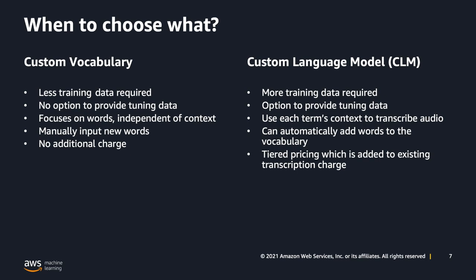Earlier in this presentation, we touched upon custom vocabulary. So when should you choose custom vocabulary versus CLM? Custom vocabularies are great, but there's an optimal number of terms that can be added before impacting performance. CLMs require more training data than custom vocabularies, which can generate significant accuracy improvements. CLMs can also recognize individual terms with context and automatically add words to their recognition vocabularies — custom vocabularies can't do that. There's no additional charge for custom vocabulary. For CLM, there's no additional charge for building the model, but you do incur an additional charge for the transcription jobs or streaming sessions where a custom language model is applied. To achieve the highest transcription accuracy, use custom vocabularies in conjunction with your custom language model.